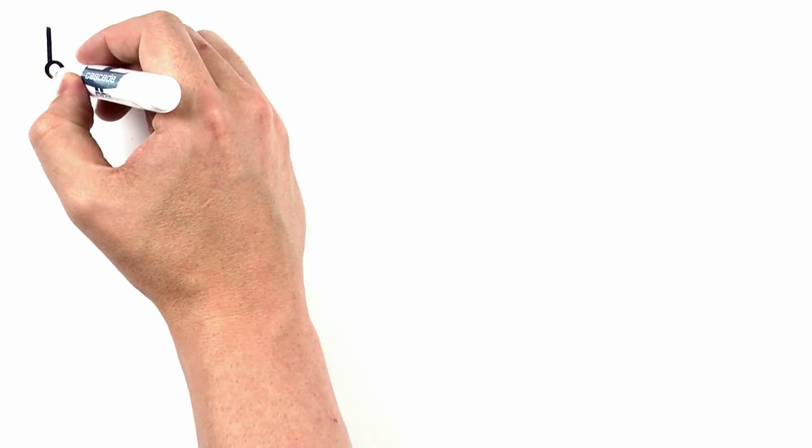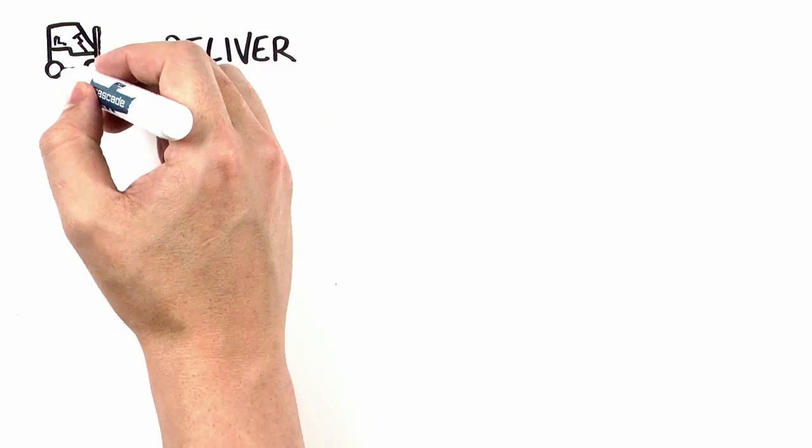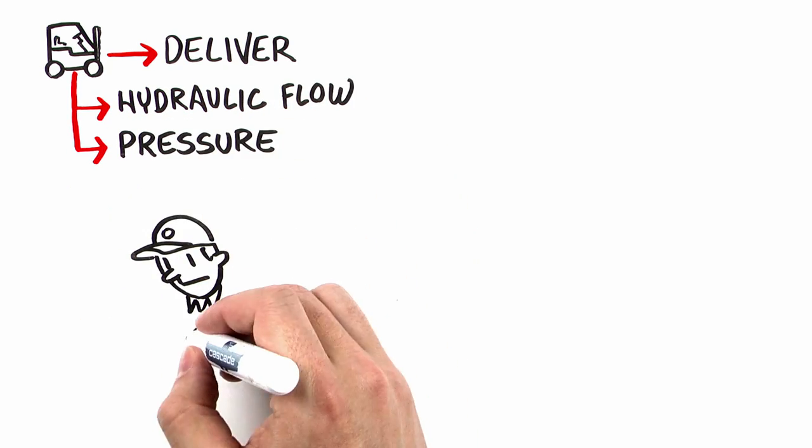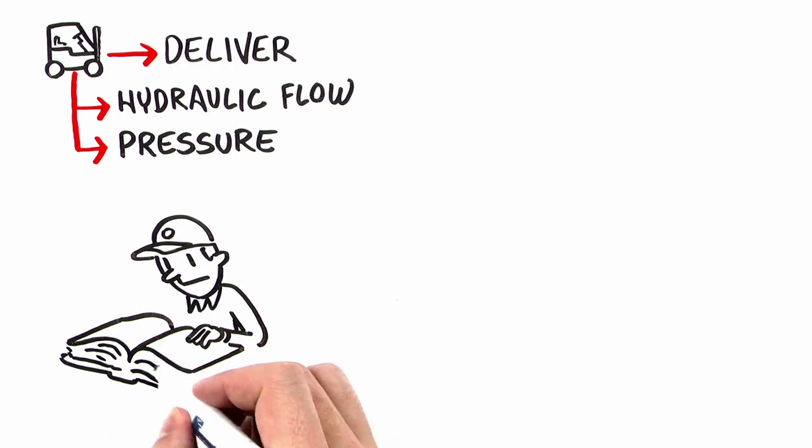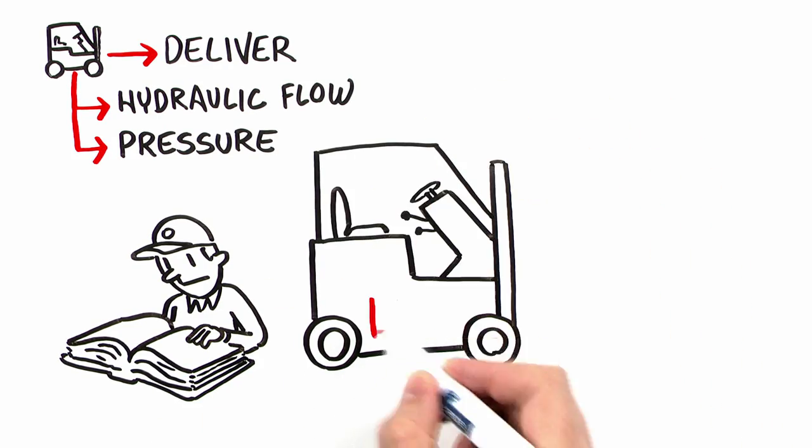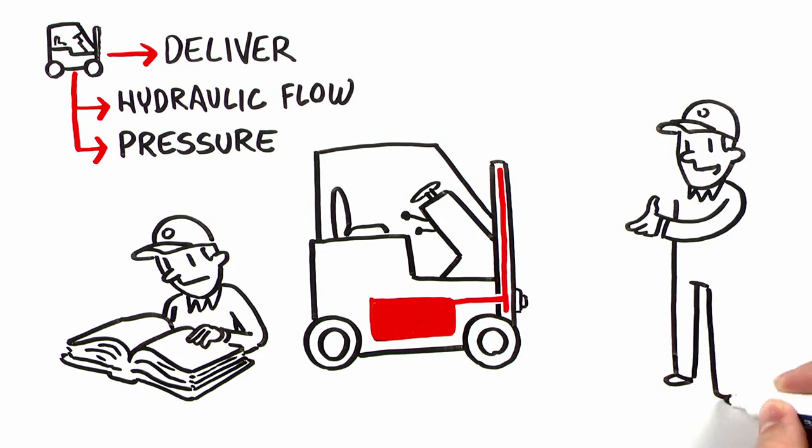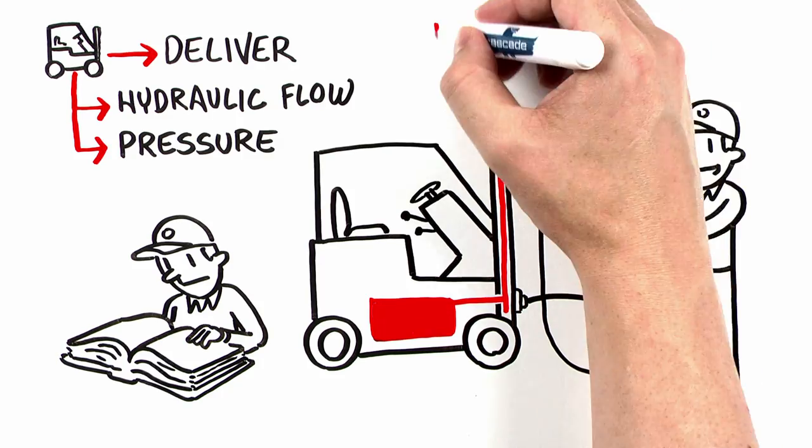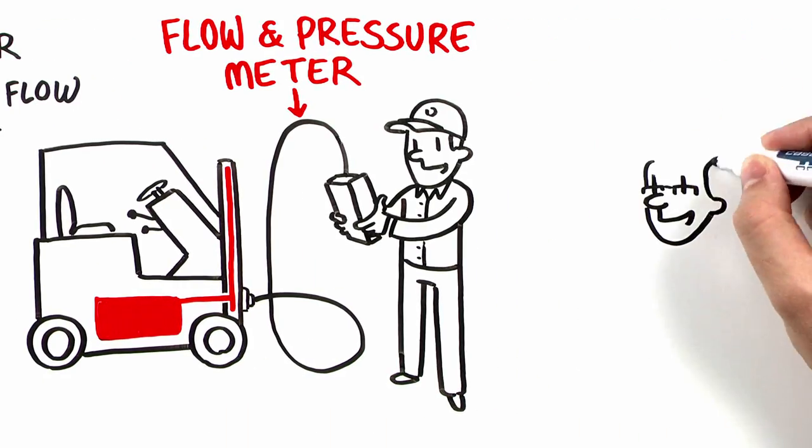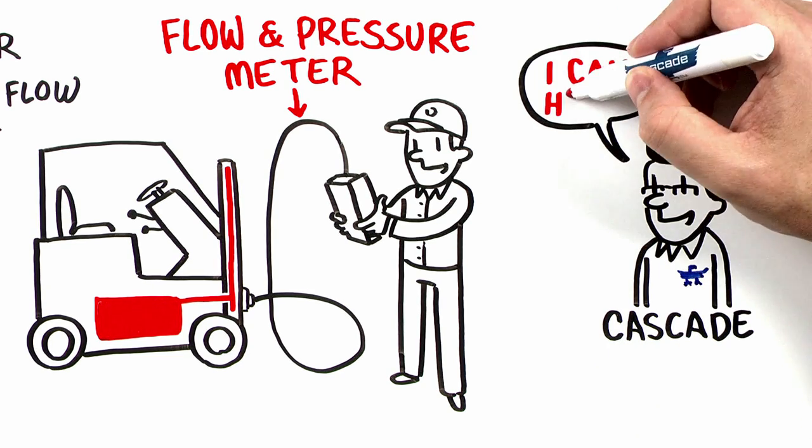Once you understand these attachment needs, you'll then need to know what the forklift is capable of delivering to the attachment in terms of flow and pressure. Essentially, all forklift manufacturers provide this information within their product literature. However, with all the variety in today's forklift configurations and capabilities, the ideal way to determine exactly what the forklift can deliver to the attachment is to use a flow and pressure meter. If your dealership doesn't have a flow and pressure meter, your local Cascade representative will be more than happy to help you obtain one.